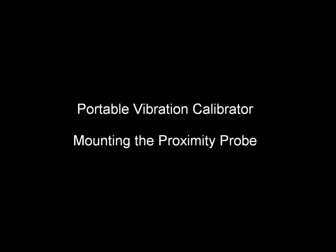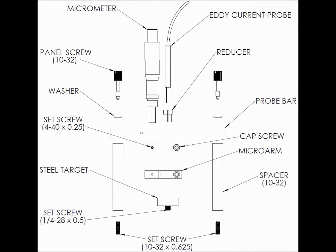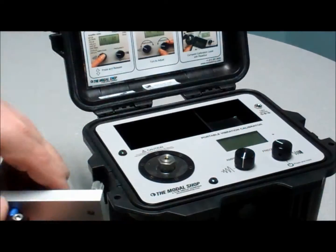Installing the Proximity Probe Calibration Kit to the Portable Vibration Calibrator. This assembly is intended to hold the Proximity Probe firmly attached to the micrometer in place above the steel target.